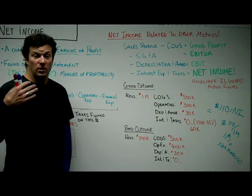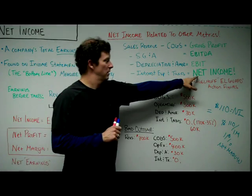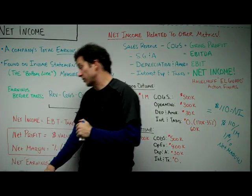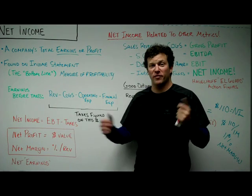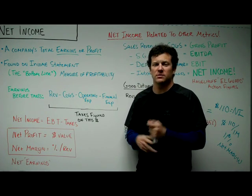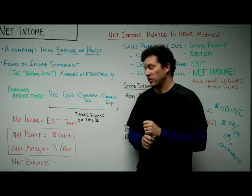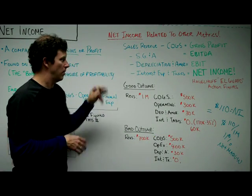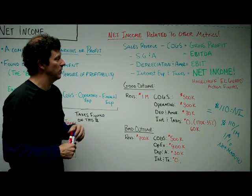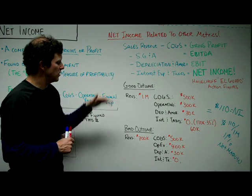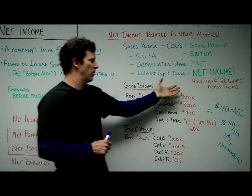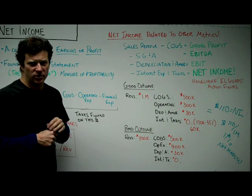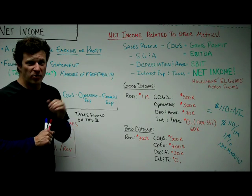All these terms are important when discussing the financial health of a company. If someone asks if your company is profitable, you say yes, we had net income last year. If they ask what your net profit was, you say $70,000. If they ask your profit margin, you say 7%. All these terms refer to the same underlying relationship. So let's look at good and bad outcomes using a fictitious company: Hasselhoff El Guapo action figures — plastic figures made in a factory in Mexico and resold in Europe to fans of David Hasselhoff.